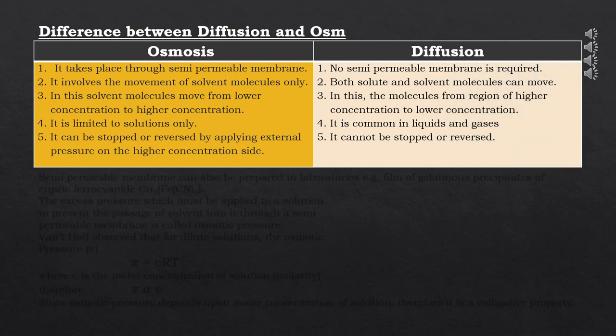Here are some differences between diffusion and osmosis. First, osmosis requires a semi-permeable membrane, while no such membrane is required for diffusion. Second, osmosis involves movement of solvent molecules only, but in diffusion both solute and solvent molecules can move. Third, in osmosis, solvent molecules move from lower concentration to higher concentration, but in diffusion molecules move from higher to lower concentration.